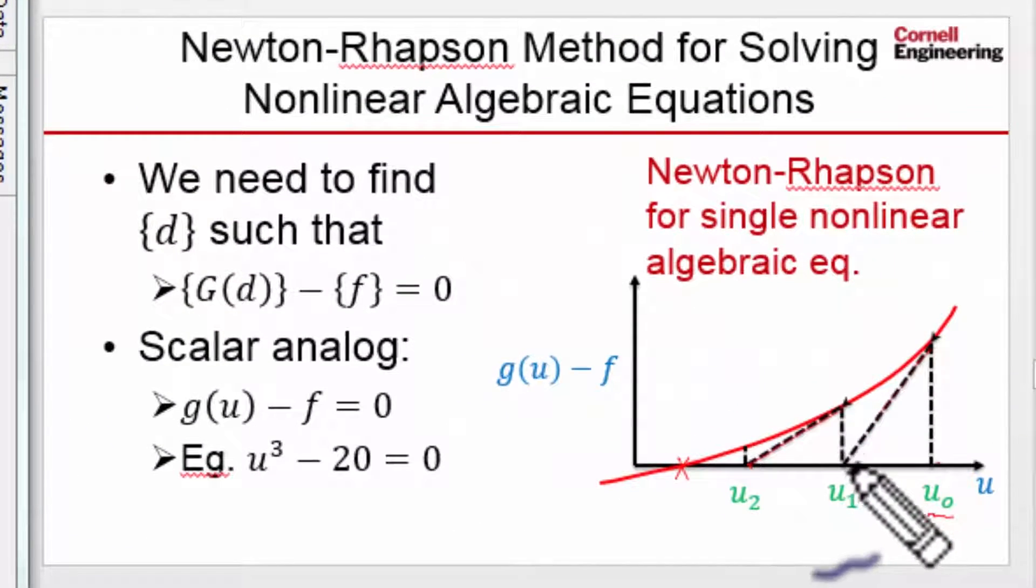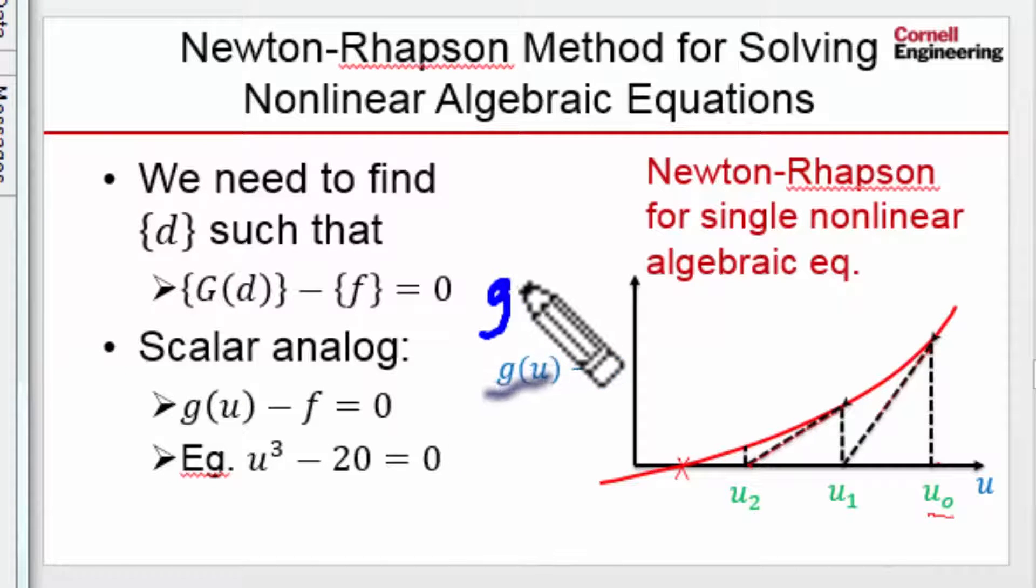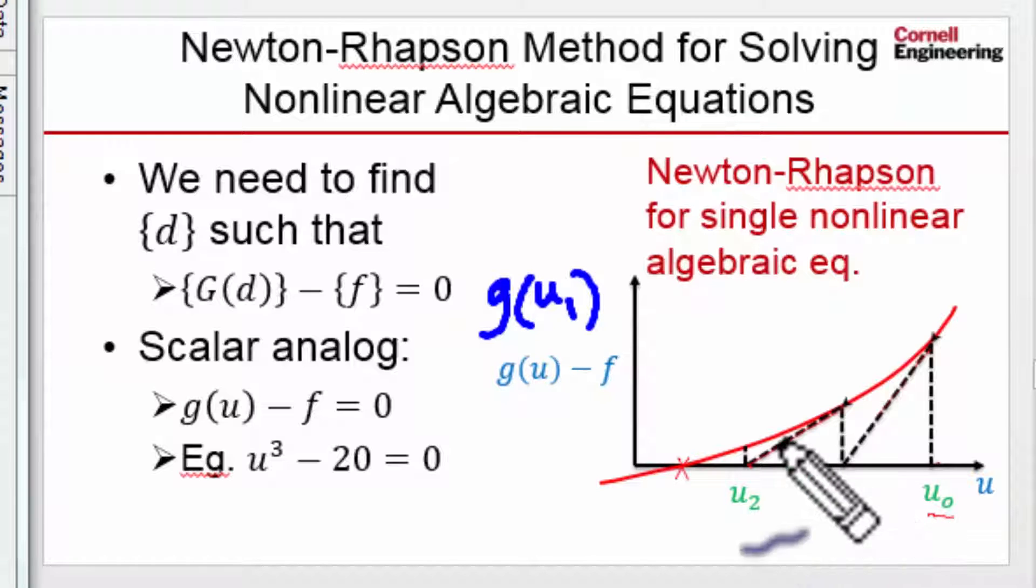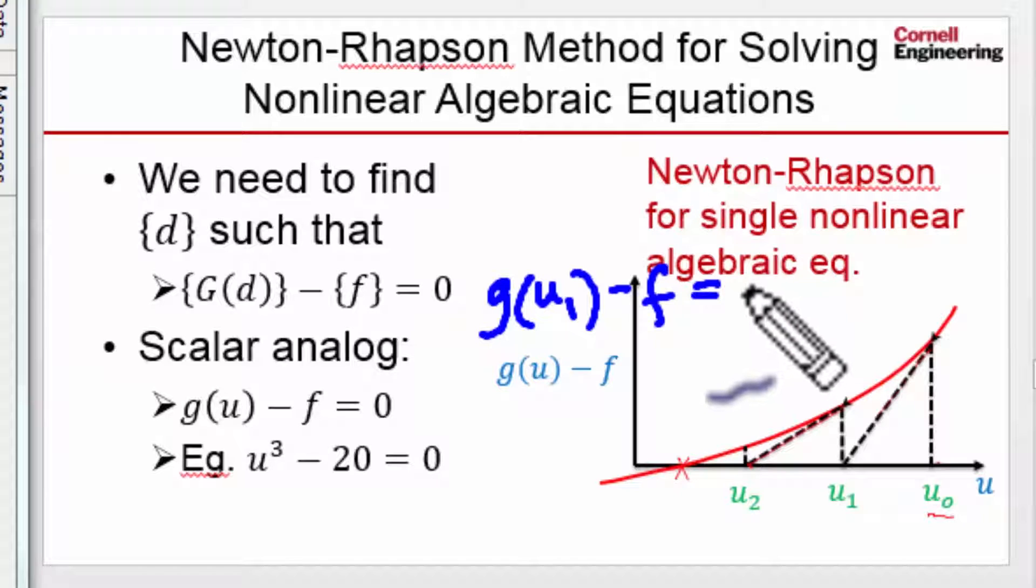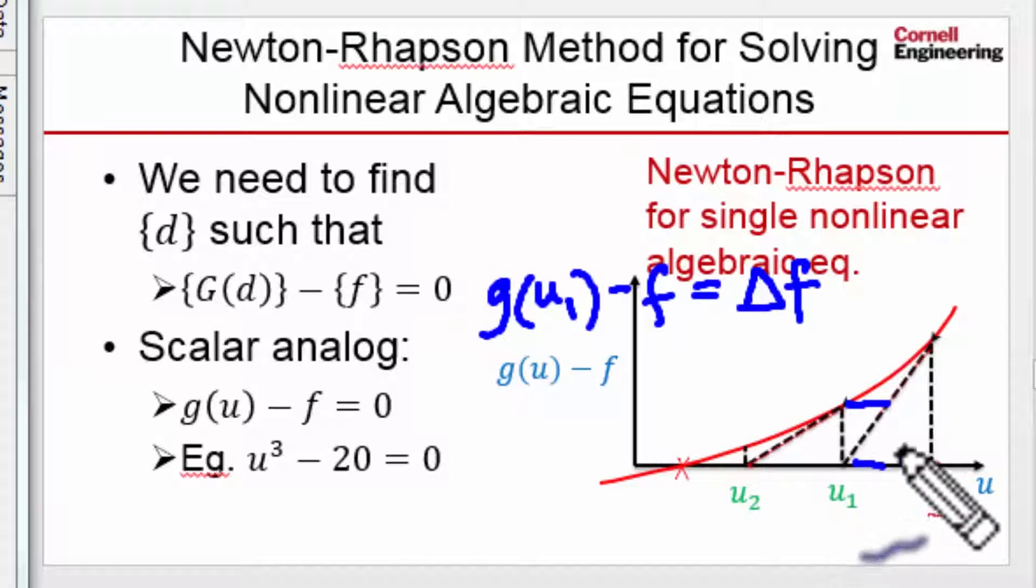You update that initial guess, and if I take that value and plug it into my equation—in this case, if I plug this new value in here—it won't be equal to zero. It'll be equal to some value Delta F, which is an error. That's Delta F in this case, and that is a force imbalance.